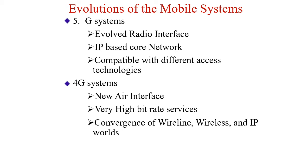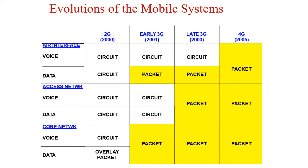4G systems have come into existence where a new air interface is in place, very high bit rate services are available, and convergence of wireless and IP worlds enables internet services, Gmail, and everything you use on your mobile device. This tabular form shows how mobile computing has evolved through generations, with voice and data as the two main parameters across 2G, early 3G, late 3G, and 4G.